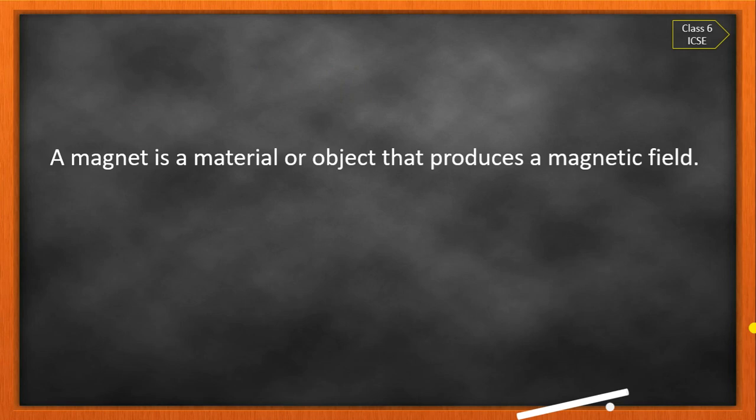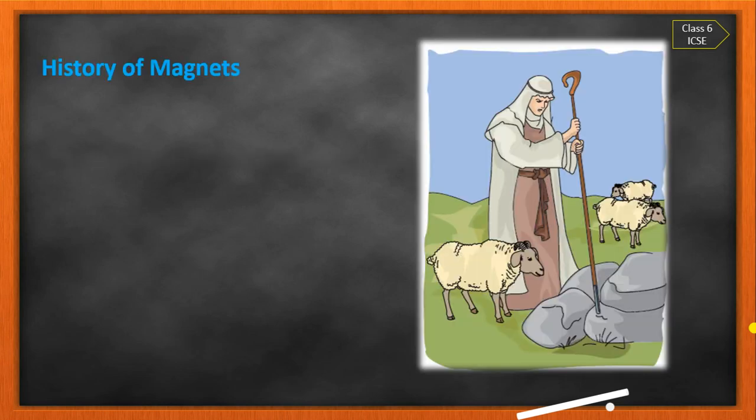A magnet is a material or object that produces a magnetic field. Kya hai magnet? Magnet aisa material hai ya object hai jo magnetic field produce karta hai.